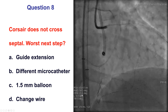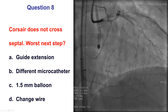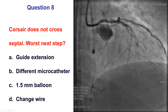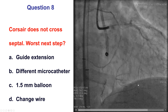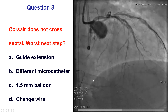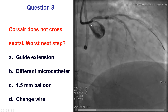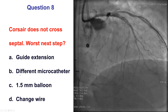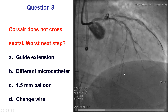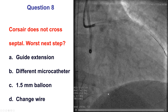Unfortunately, we could not get the microcatheter — the Corsair — to track. So what would be the worst next step? Guide extension, different microcatheter, 1.5 mm balloon, or change wire? Obviously, we don't want to change the guidewire because the wire position through the septal collateral was hard to obtain. But all the other options are good: using a guide extension on the antegrade guide, using a different microcatheter, or using a small balloon are all options when the microcatheter does not follow the wire through a septal collateral.